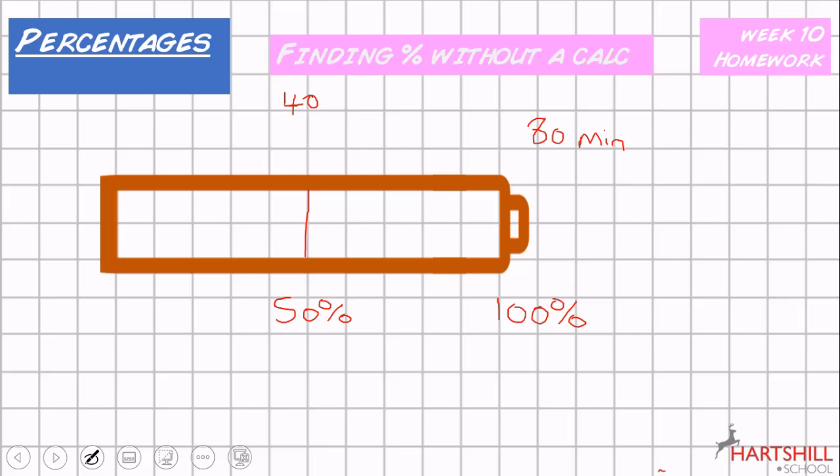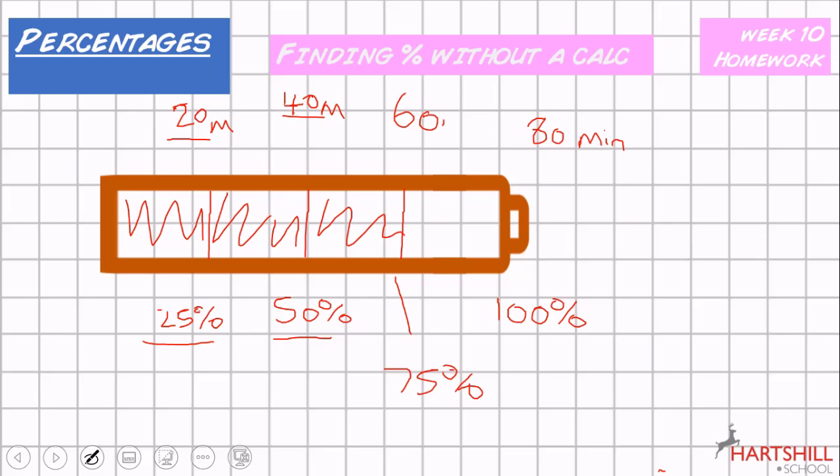Now let's assume you charged it only to 25%. Well, if 50% is 40, then 25% should surely be 20 minutes worth of talk time. So 75% would be 25% plus your 50%. So 25% is 20 minutes, 50% is 40 minutes. So 75% would be 25 plus 50, which will give you 60 minutes of talk time.